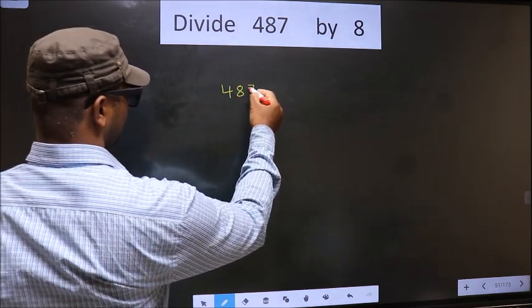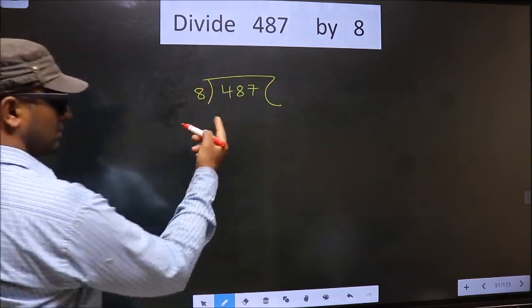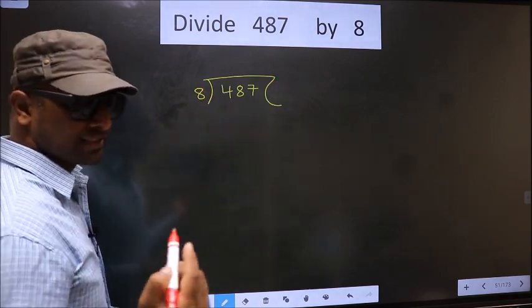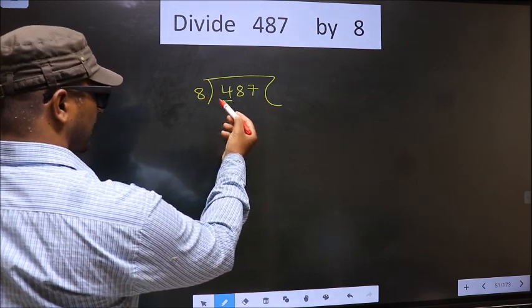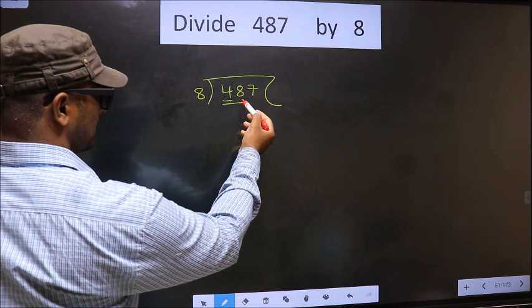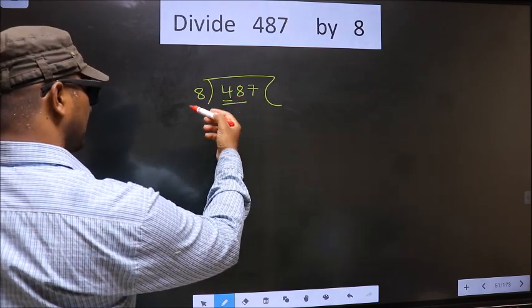That is 487, 8 here. Now here we have 4, 4 smaller than 8. So we take two numbers that is 48. When do we get 48 in 8 table?